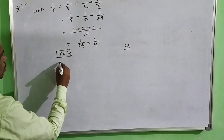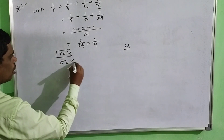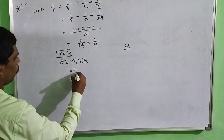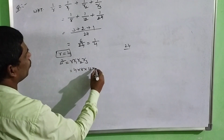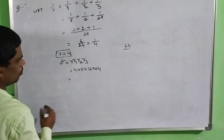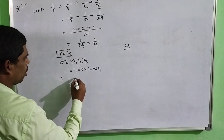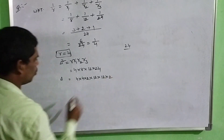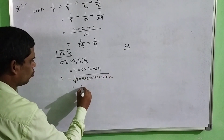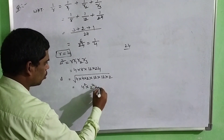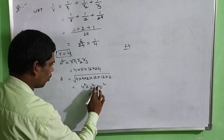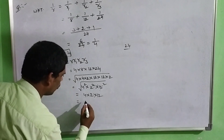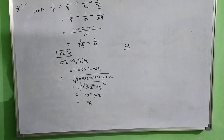Next, we use the formula Δ² = r · R1 · R2 · R3. Substituting: Δ² = 4 × 8 × 12 × 24. Writing 8 as 4×2 and 24 as 12×2: Δ = √(4² × 2² × 12²) = 4 × 2 × 12 = 96. This is the value of Δ.